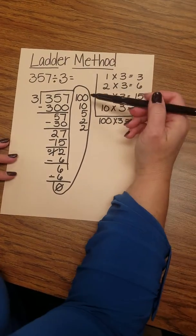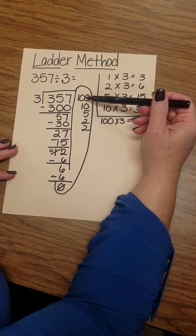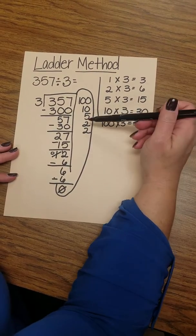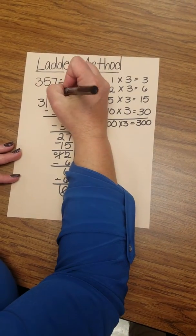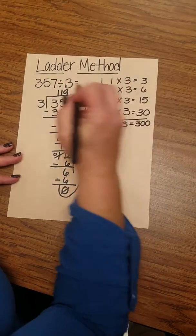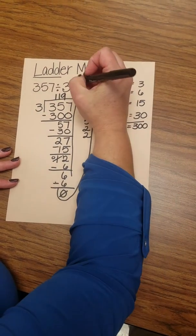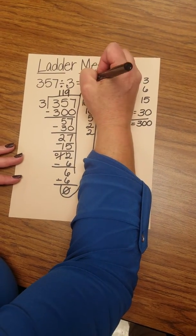I need to collect my tools and add them up. 100, 10, 5, 2, and 2, and that gives me 119. So 357 divided by 3 is 119.